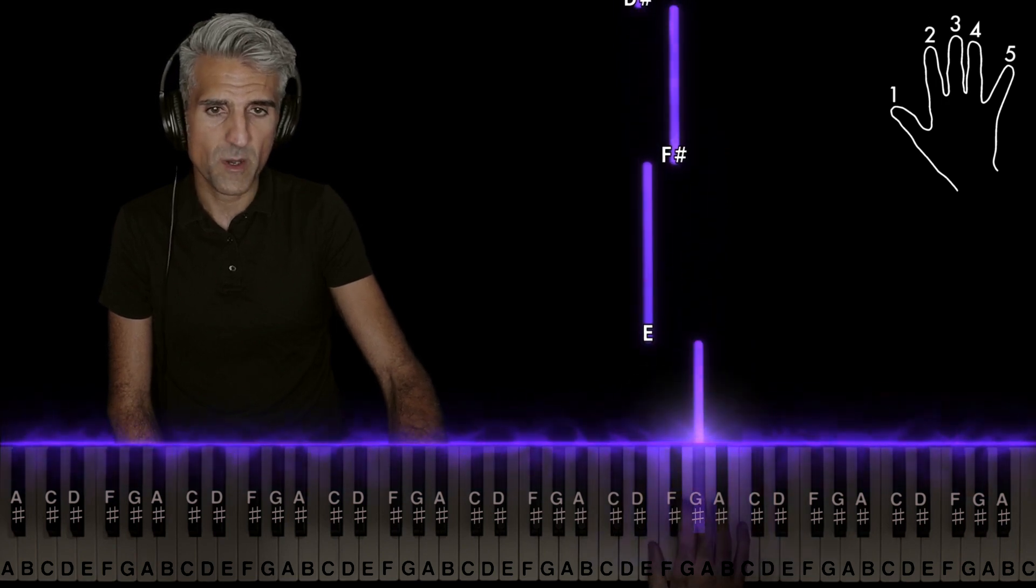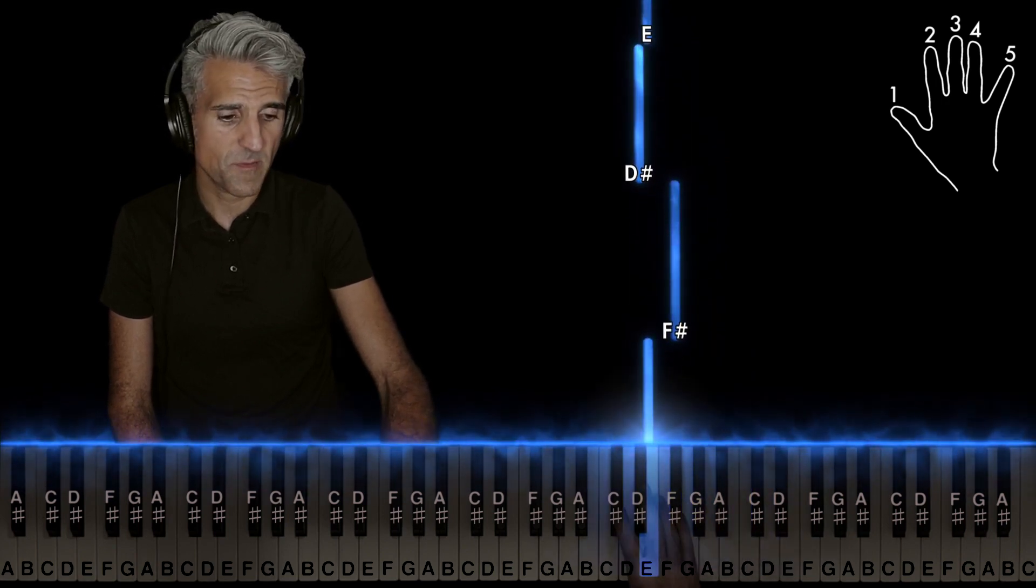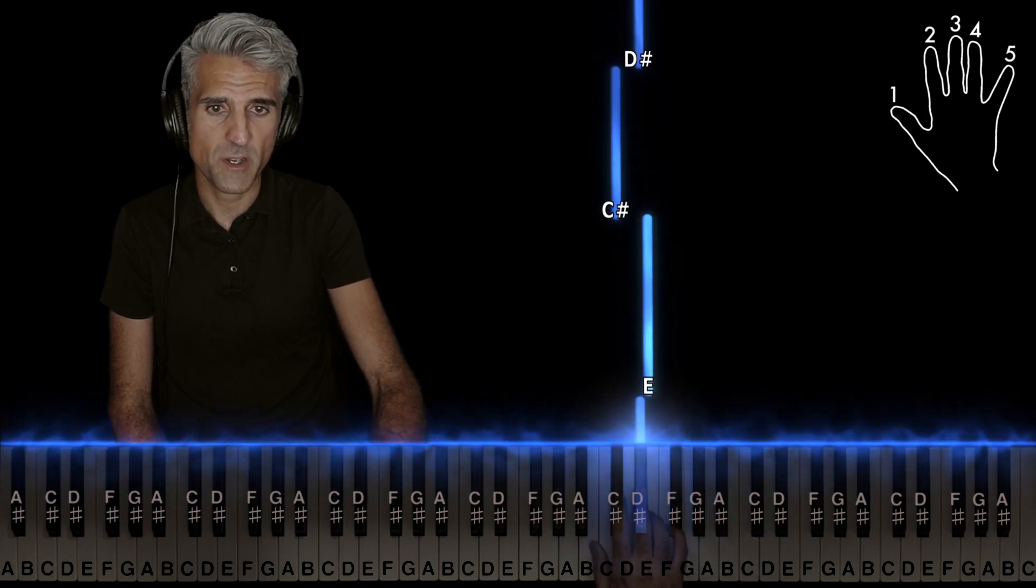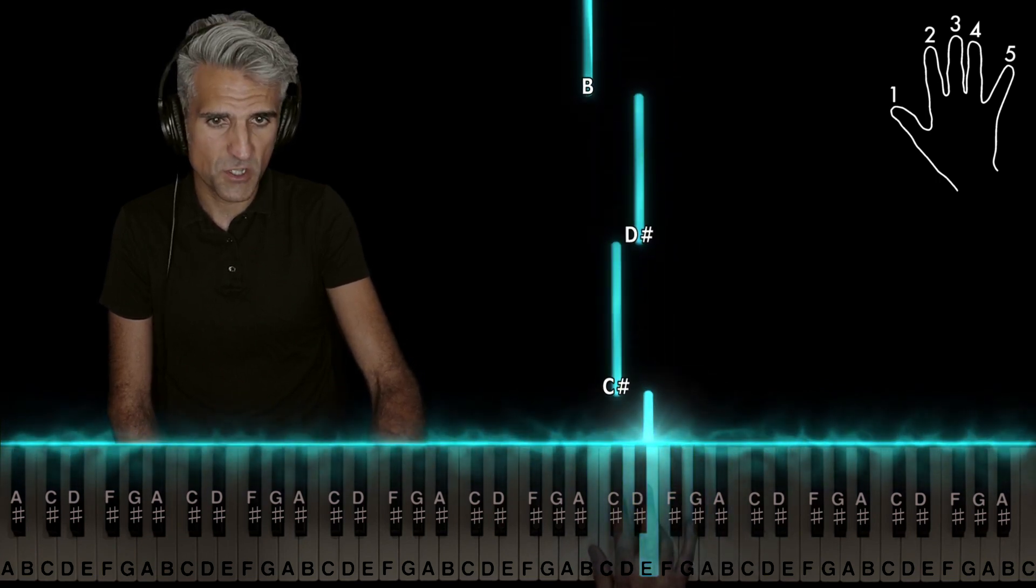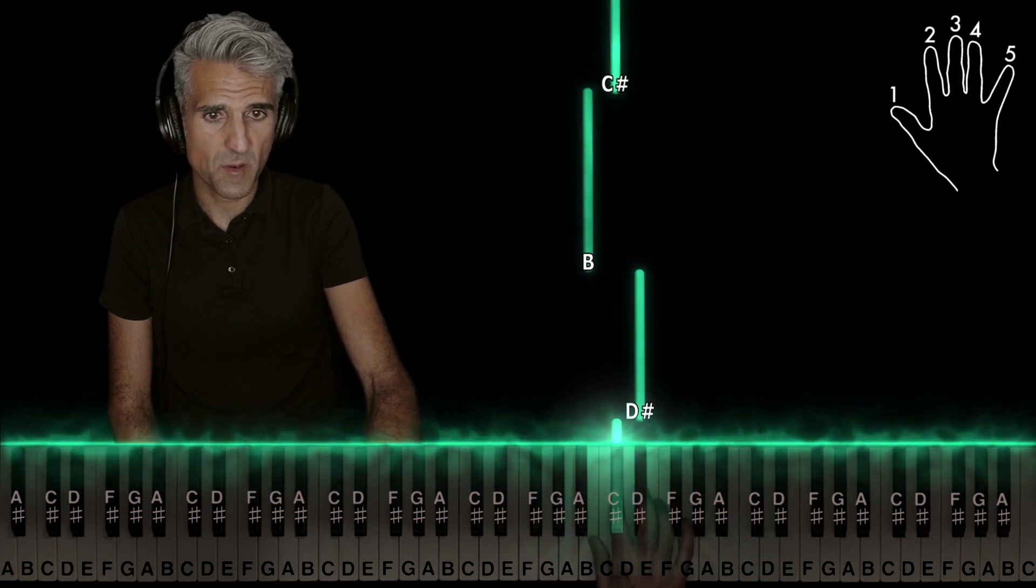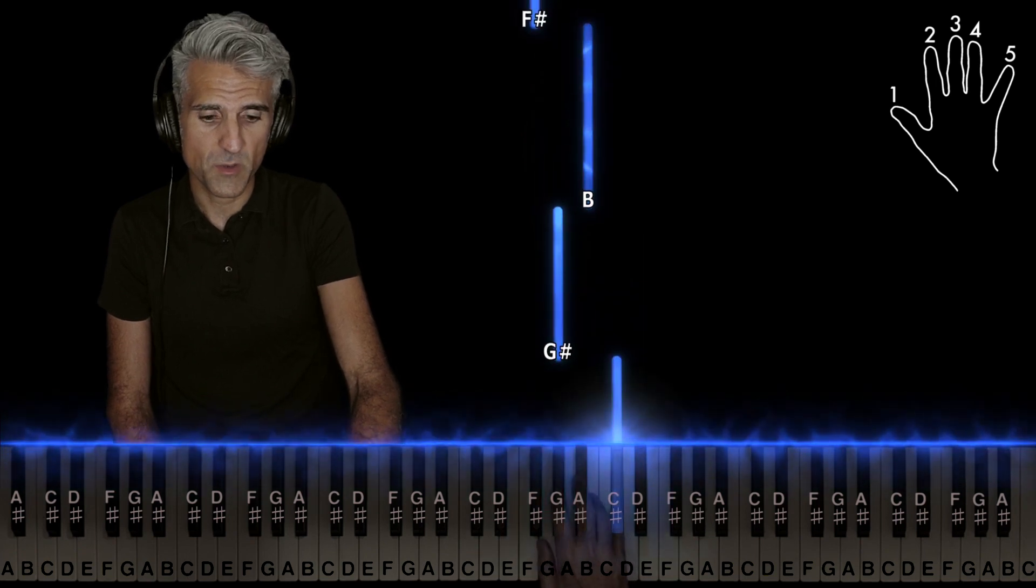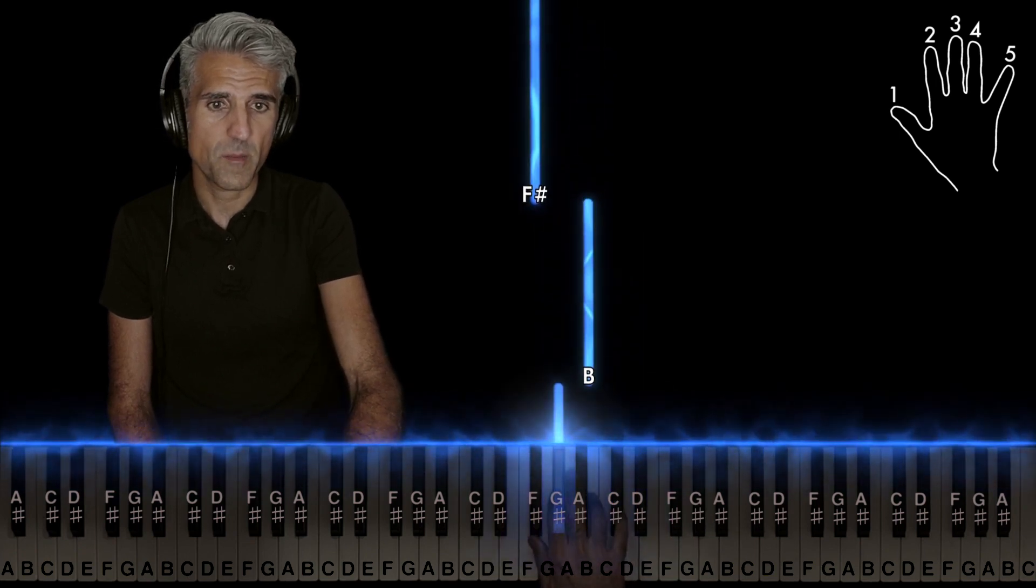Three on G sharp, one on E. Close your hand up: five on F sharp, three on D sharp, four on E, two on C sharp. Three on D sharp, one on B. Close your hand up: five on C sharp, two on G sharp, four on B.